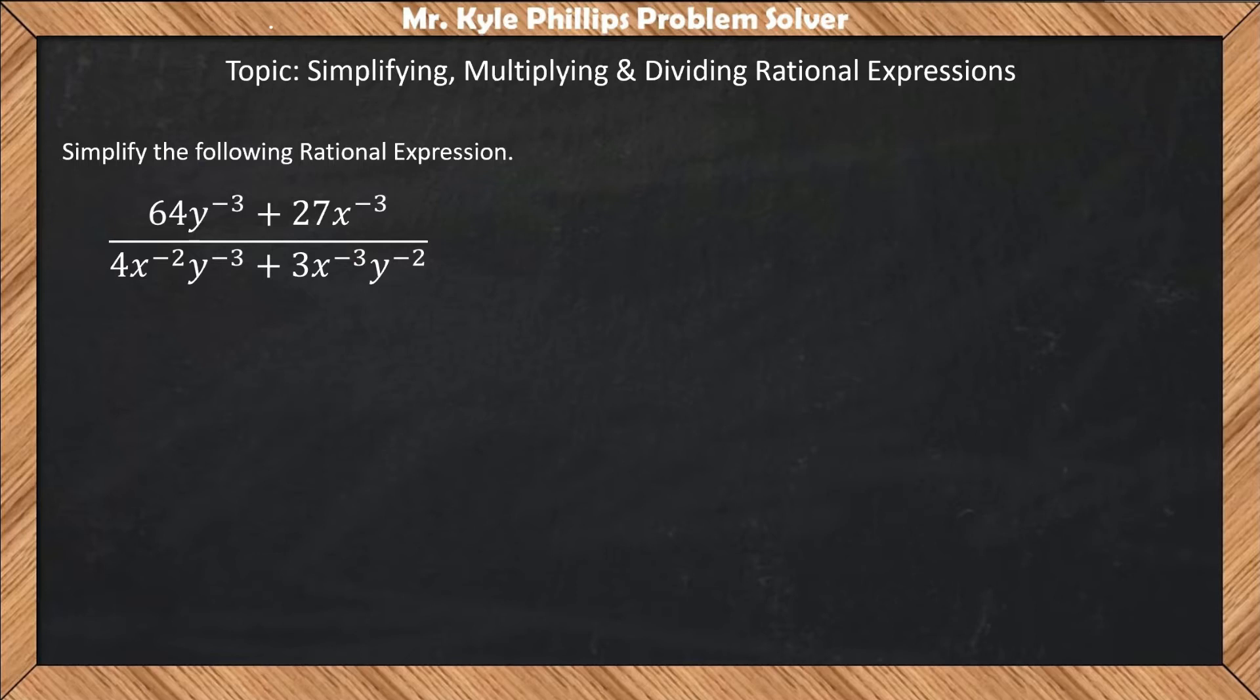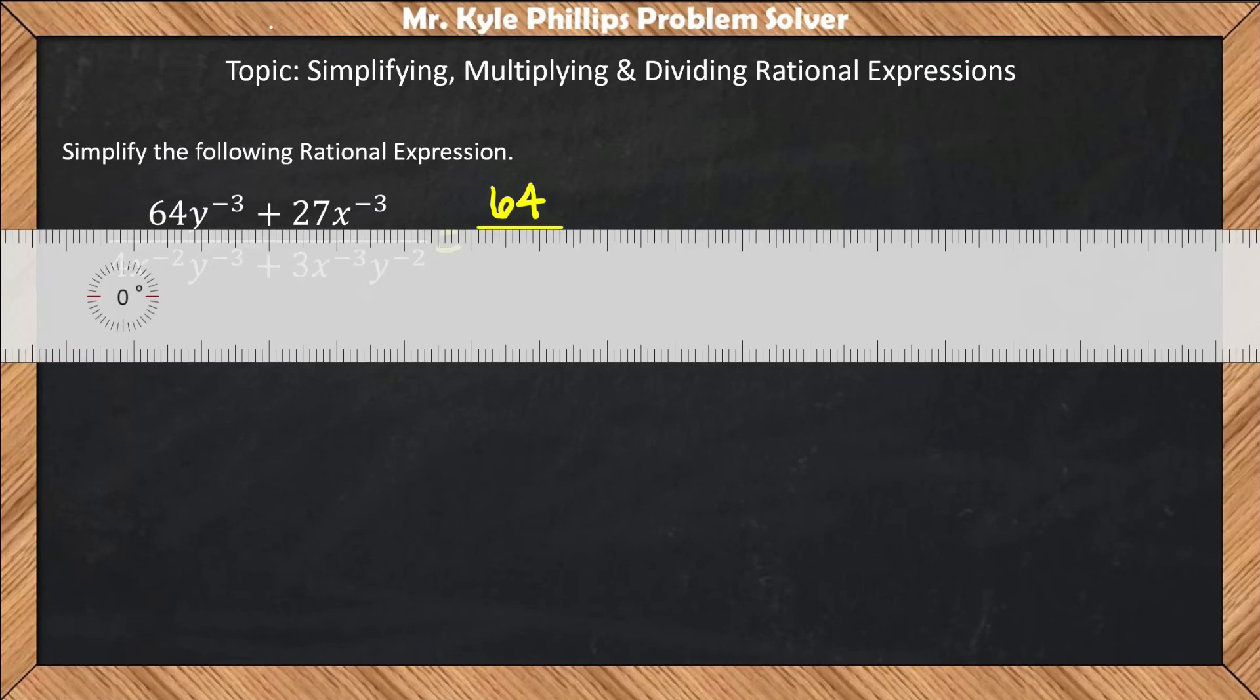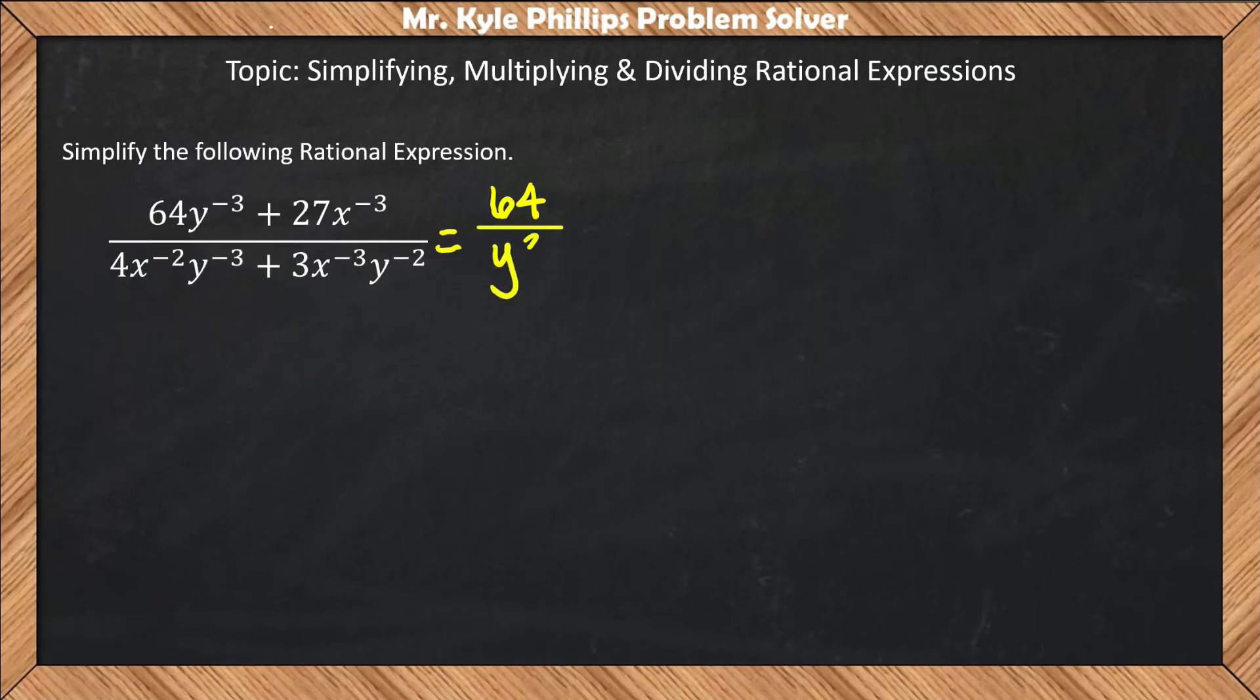What we're going to want to do is get rid of all the negative exponents. When we do this, we'll have complex fractions. So here we'll have 64/y³ + 27/x³...